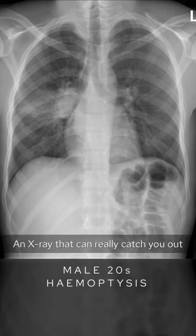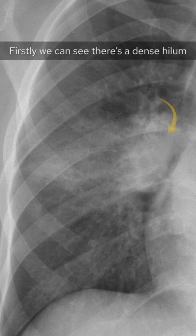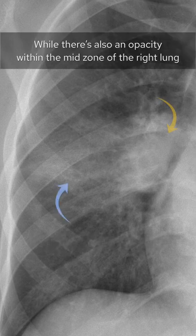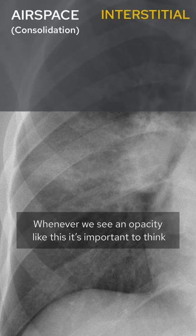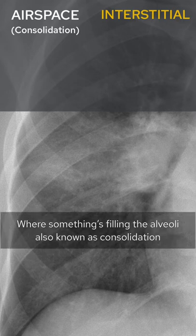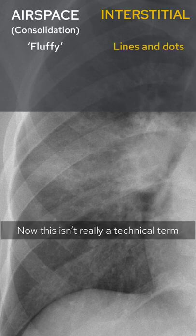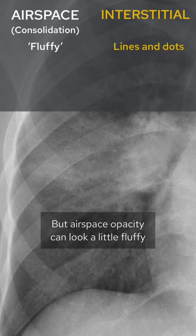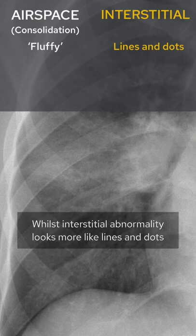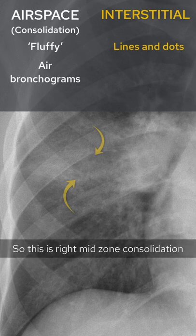This is an X-ray that can really catch you out. The right lung is abnormal. Firstly, we can see there's a dense hilum, while there's also an opacity within the mid zone of the right lung. Whenever we see an opacity like this, it's important to think: is it an airspace opacity where something's filling the alveoli — also known as consolidation — or is it an interstitial opacity? Airspace opacity can look a little fluffy whilst interstitial abnormality looks more like lines and dots. With airspace opacity you may also see small circular lucencies called air bronchograms, and I think this is what we can see here.